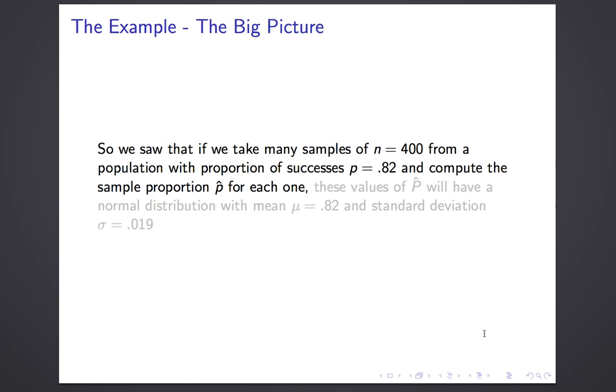What we saw is that if you take many samples of N equals 400 from a population, where the proportion of success P is 0.82, and you compute the sample proportion P-hat for each one, these values will have a normal distribution with a mean of 0.82 and a standard deviation of 0.019. In other words, you can predict what will happen when you take a sample as a random variable. So those three things, normal distribution, the mean, and the standard deviation, are what we can predict.